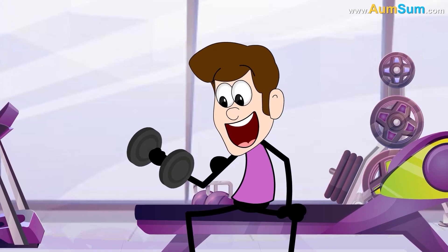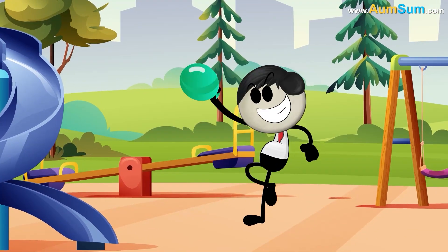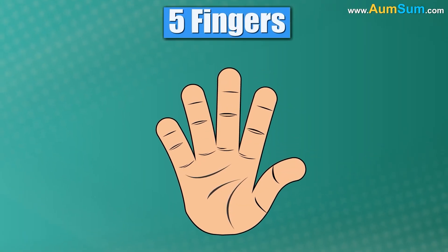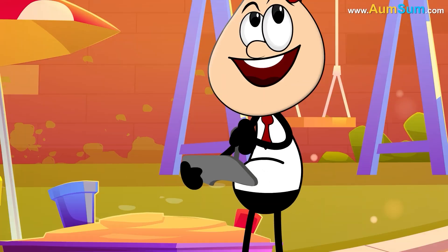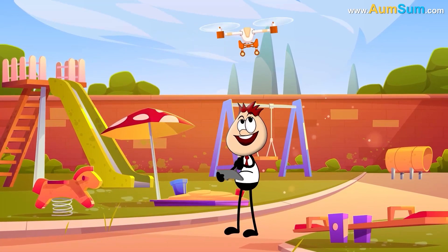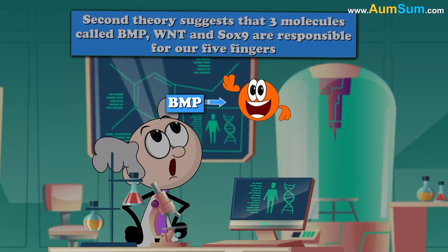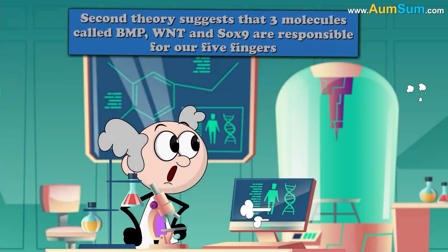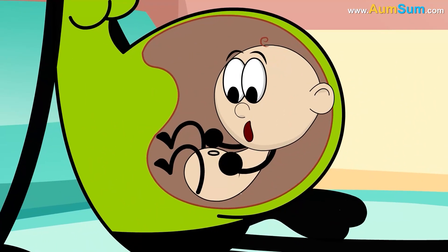Why do humans have five fingers? One theory suggests that we have five fingers because together they make a perfect strong grip, allowing us to operate small objects with great control and precision. A second theory suggests that three molecules called BMP, WNT, and SOX9 are responsible for our five fingers, as in our embryonic stage they mark out spaces specifically for these five fingers.